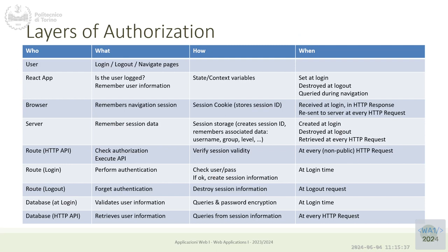In a client-server application, authorization is a multi-layer stack of checks and permissions. From the user's point of view, the user can navigate through the routes we've implemented, and now we are adding two special functions: login and logout. Whether the login is successful or not, the navigation of pages may be affected by the identity of the person. After login the user can do something more, or log out and become anonymous again.